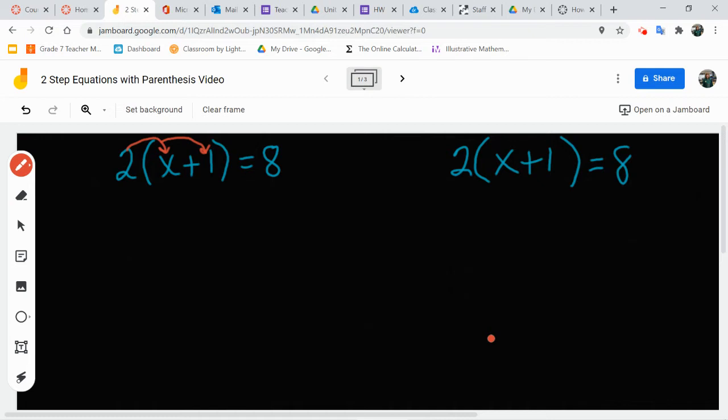All right, so if I'm distributing that or multiplying it to everything inside, 2 times 1x gives me 2x plus 2 times 1 gives me 2 equals 8. Now I am set up to solve this just like the two-step equations in the first video.